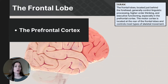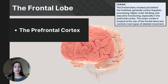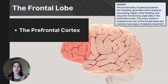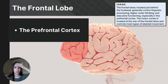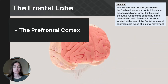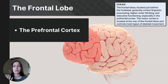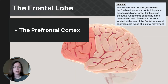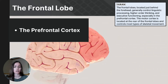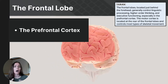Within the frontal lobe are more specialized areas. The first is the prefrontal cortex, located at the very front of the frontal lobe, just behind the forehead. This is the part specifically involved with higher order cognitive functioning — things like planning, making decisions and judgments, reasoning, problem solving, regulating emotions, and controlling impulses. These are functions central to our complex thinking.